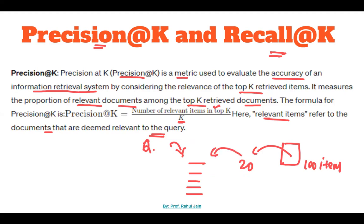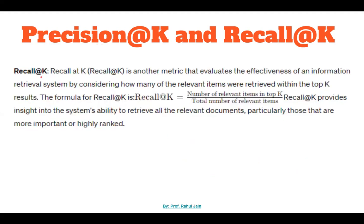Out of these 20 fetched items, whatever is the relevant documents — that is called the number of relevant items, which we call the top relevant items. On this basis we are going to calculate Precision@K. Now, Recall@K is another metric that evaluates the effectiveness of an information retrieval system — how effective your information retrieval system is — by considering how many relevant items were retrieved within the top K, divided by the total number of relevant items.